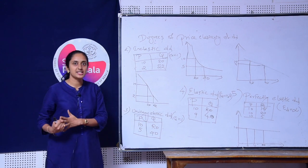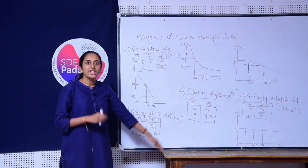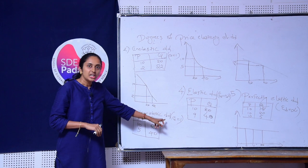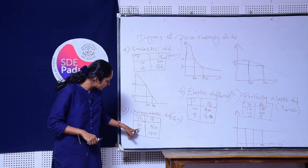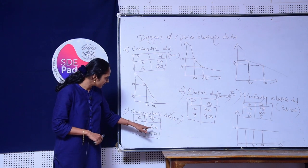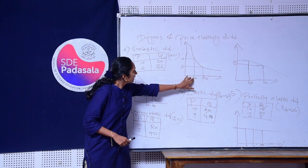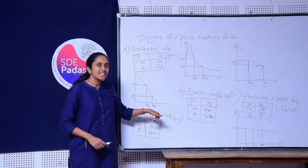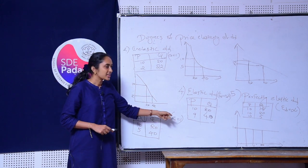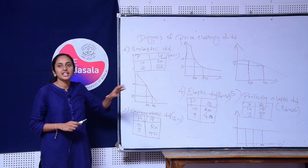The third degree of Price Elasticity is Unitary Elastic Demand. Demand for a commodity is said to be unitary elastic when, to a percentage change in price, there is an equal proportionate change in quantity demanded. For example, the initial price is 10 and the quantity demanded is 20. When the price falls to 5, the quantity demanded doubles to 40. The curve for unitary elastic demand is a rectangular hyperbola. The coefficient of unitary elastic demand is equal to 1, and this occurs mostly in the case of normal goods.